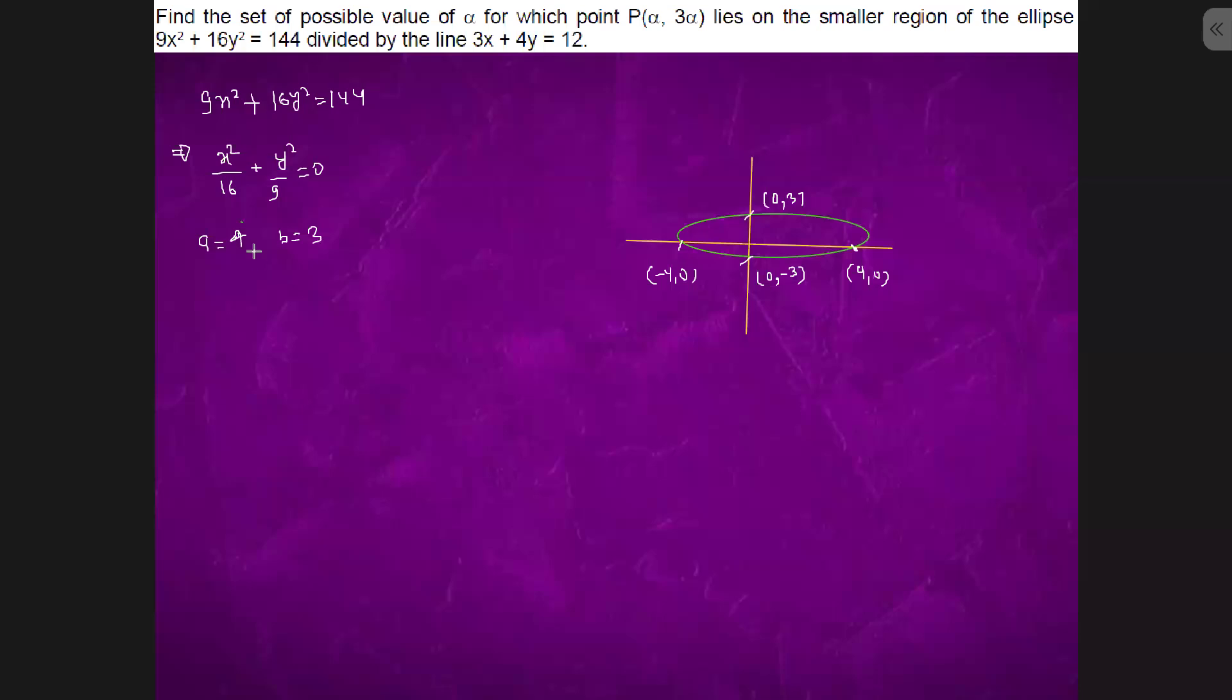Now we are told about a line 3x + 4y = 12. In this line, if we put x = 0, y is 3, and when we put y = 0, x is 4. So this is the line.